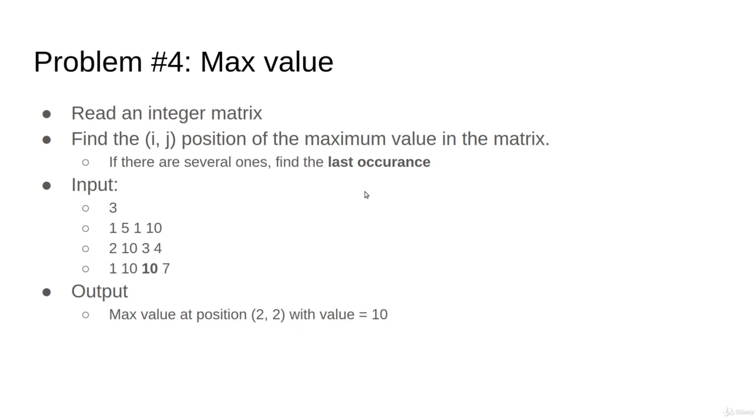Max value. You will read an integer matrix and find the position i and j of the maximum value in the matrix. If there are several ones, find the last occurrence. For example, in this matrix, we see the max value is 10, and the last 10 that happens is this one here at position 2 and 2. So we'd like to find the last occurrence of the maximum value.